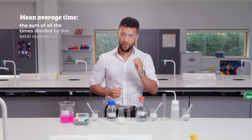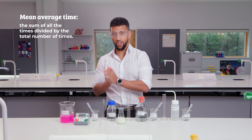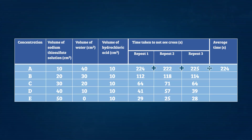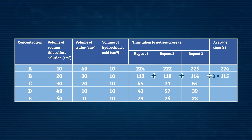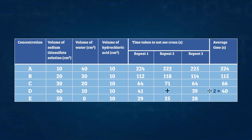To calculate the mean average time for each concentration, add up the times and then divide by the total number of times. If you have any anomalies — results that don't follow the trend — do not include them when working out the average.